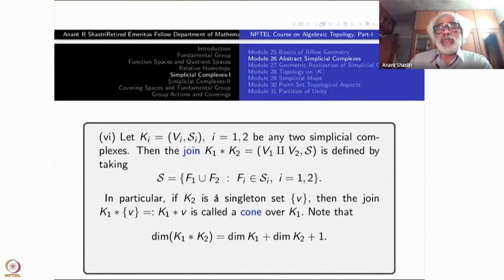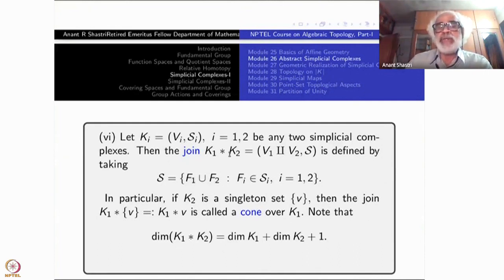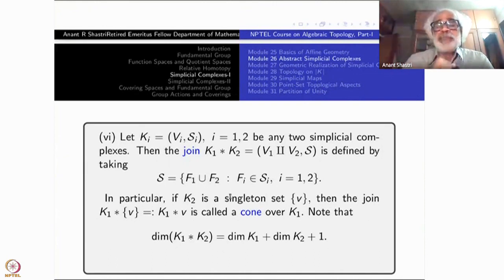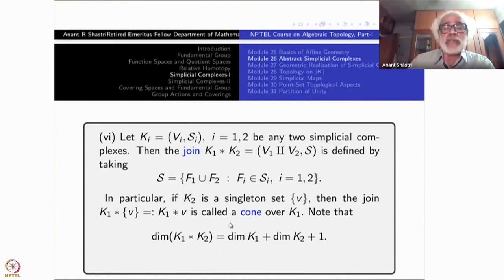If K₂ is empty, you will get just V₁ for the vertex set and S₁ for the simplices, so you just get K₁. This is one of the reasons why the topological join X ★ Y is also defined to be X when Y is empty. Similarly, if K₁ is empty then it is just K₂.